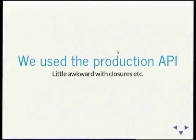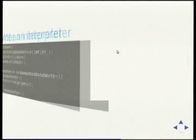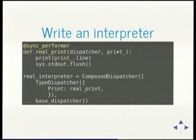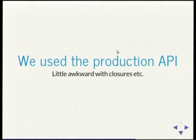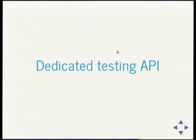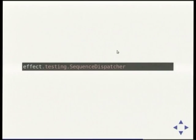That code was the production API. It's not beautiful code because I'm keeping examples really tiny, but it is production — a little bit awkward with some closures. There is however a dedicated testing API: it's got this thing called SequenceDispatcher. One of the fun things about writing this talk is as I went through it and said to Chris 'hey this is a bit hard to use' — he went and fixed things. This is the third or fourth iteration of the talk.